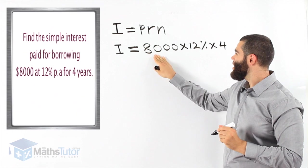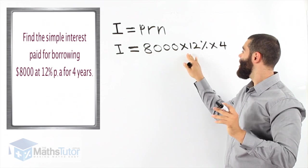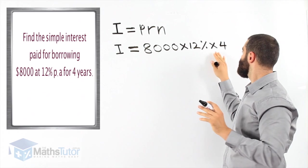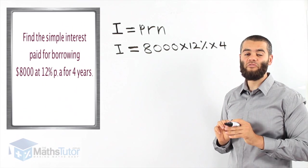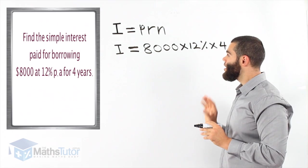I equals P, the principal, times the rate, times the time or the number of periods, which in this case is four years. So, this person is borrowing $8,000. For four years.